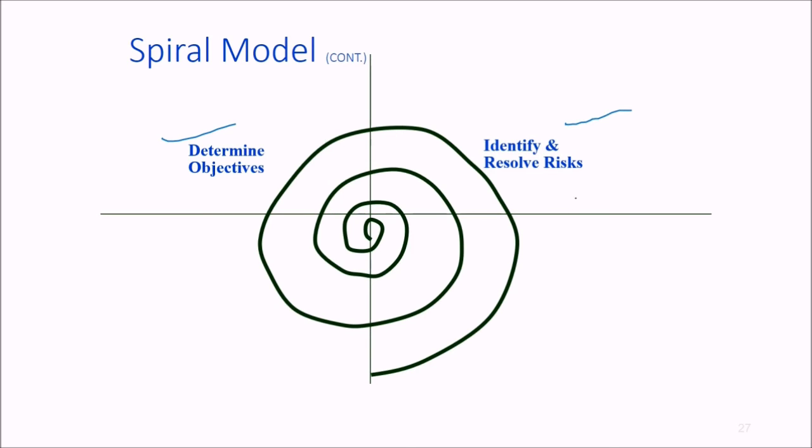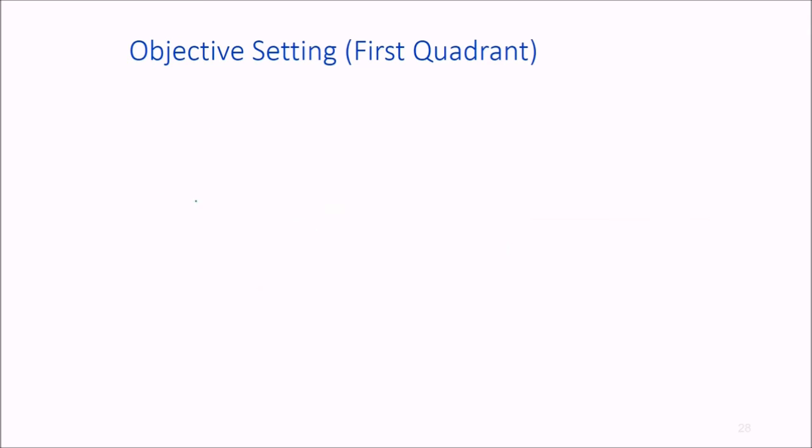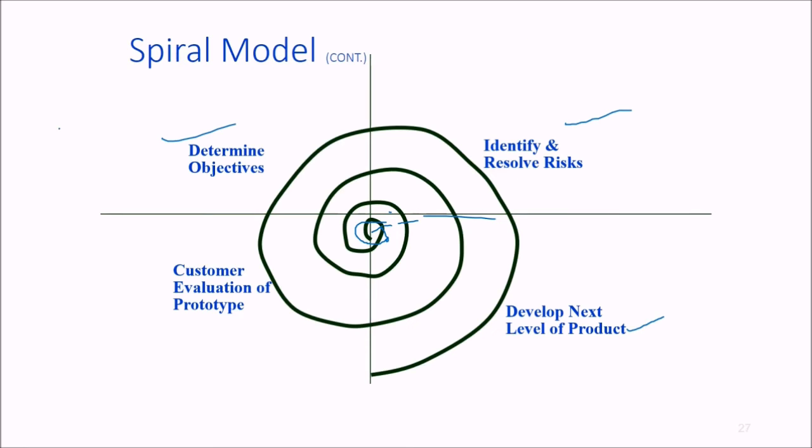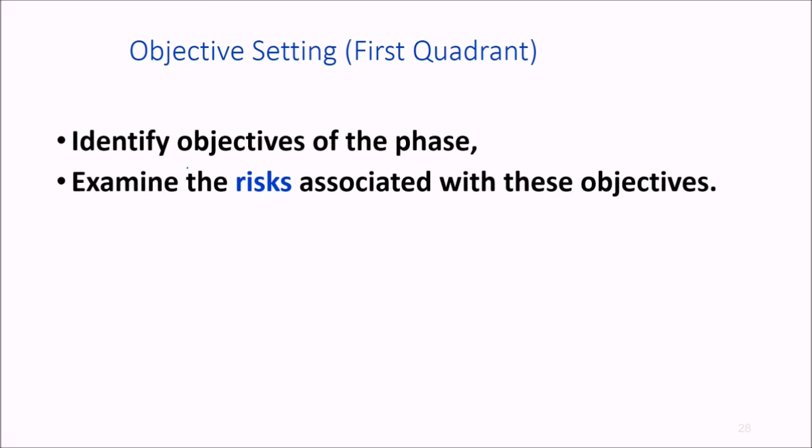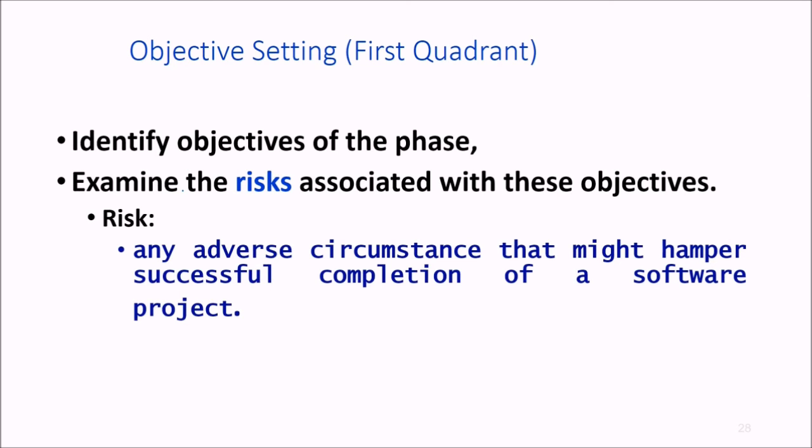The first loop may be requirement specification, then feasibility, requirement specification, design, and so forth. The first quadrant is objective setting, which means identifying objectives of the phase and examining the risks associated with these objectives. Risk refers to any adverse or unacceptable circumstances that might hamper successful project completion. Then we find alternative solution possibilities.